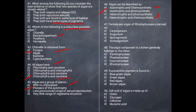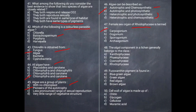Next question: The female sex organ of Rhodophysis is termed as what? The female sex organ in red algae is called a Carpogonium.